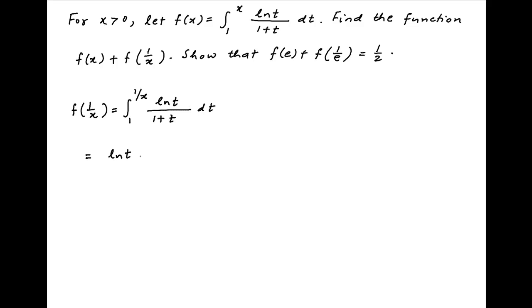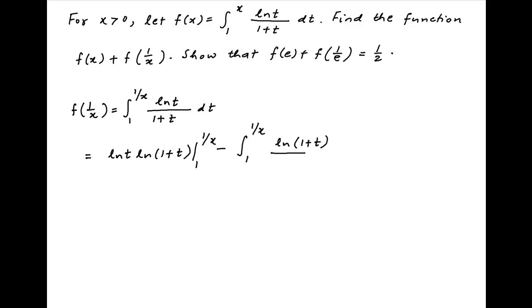Integrating by parts, we get ln(t) times the integral of 1/(1+t), which is ln(1+t), evaluated at the limits 1 and 1/x, minus the integral from 1 to 1/x of ln(1+t) times the derivative of ln(t), which is 1/t, dt.